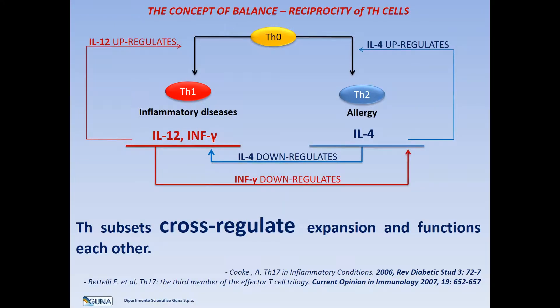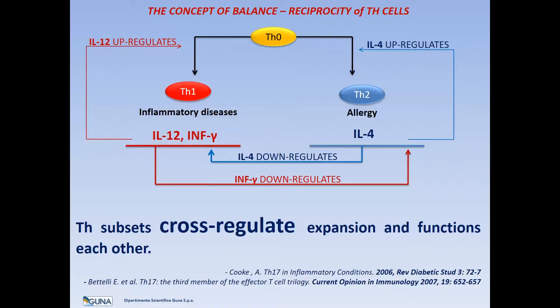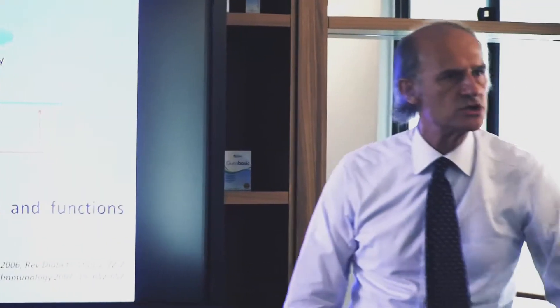The concept to understand the use of antagonistic cytokines is expressed in a wonderful paper from Cook and Vettelli — Review of Diabetic Study 2006 and Current Opinion Immunology 2007 — when these two authors spoke in terms of cross-regulation. How to explain in a very easy way the concept of cross-regulation?